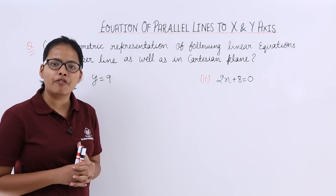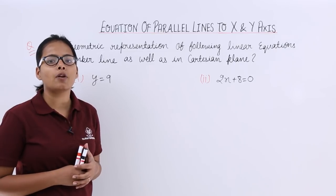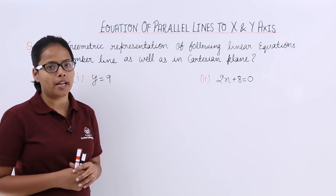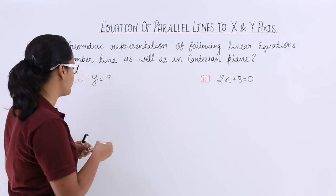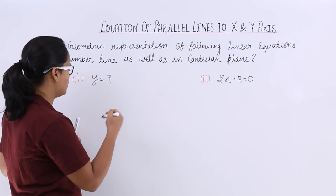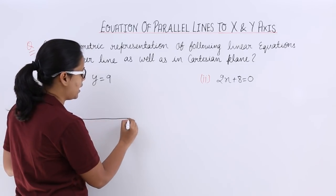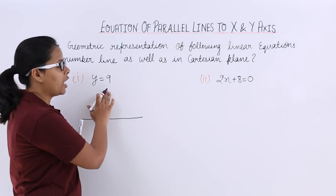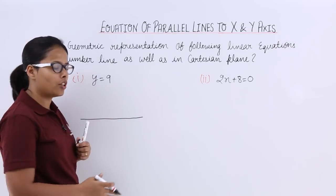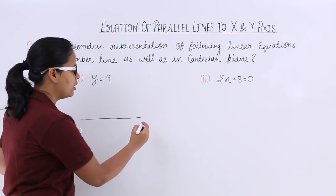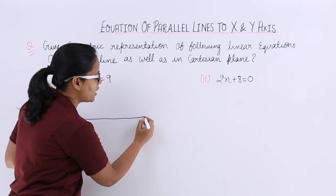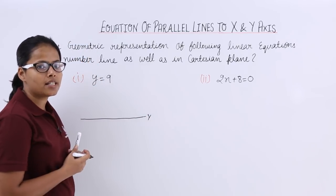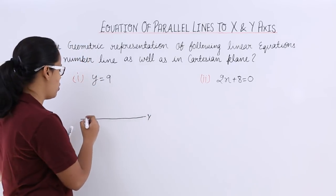As you are already familiar with what is a number line and what is a Cartesian plane, let's start with the number line. Here is a number line. What you have to do is locate this point on this number line. Here I have plotted the y axis horizontally — this is the y axis which I have plotted horizontally.